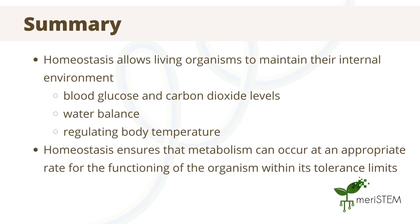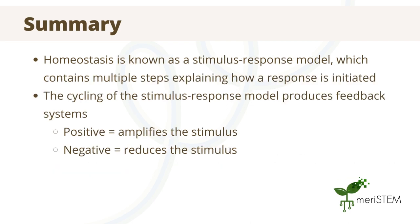In summary, homeostasis allows both plants and animals to maintain their internal environment, including blood glucose and carbon dioxide levels, water balance and regulating body temperature. This is to ensure that metabolism can occur at an appropriate rate for the functioning of the organism within that particular organism's tolerance limits. The process of maintaining homeostasis is known as a stimulus-response model, which outlines the steps required for the organism to initiate a response. The cycling of this system produces either positive feedback systems, which amplify the stimulus, or negative feedback systems, which reduce it.